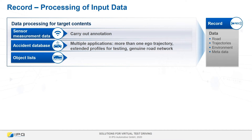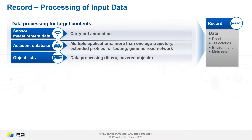The third frequently used variant are object lists, as they come directly from camera or radar ECUs. These object lists are error-prone and of lower quality than the methods described above, but are more common. For this kind of data, we provide data processing which enables us to improve the data.